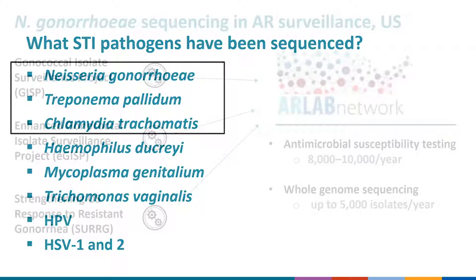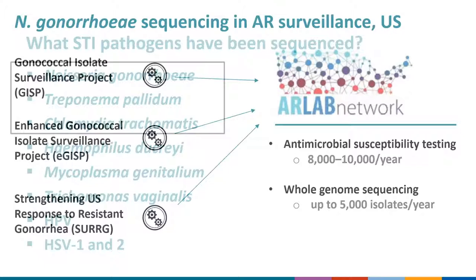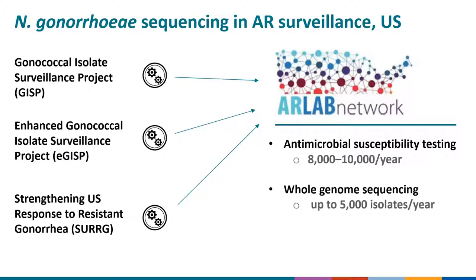The use of genomics in Neisseria gonorrhoeae surveillance is in its early stages, but substantial groundwork has been laid. In the U.S., cultures are collected for susceptibility testing through GISP, the Enhanced Gonococcal Isolate Surveillance Project or eGISP, and also SURGE — all platforms focused on monitoring susceptibility. Isolates are sent to the Antibiotic Resistance Laboratory Network for susceptibility testing by agar dilution, and a subset of up to 5,000 isolates each year undergo whole genome sequencing. These data serve as the foundation for learning to apply genomics to public health and surveillance.